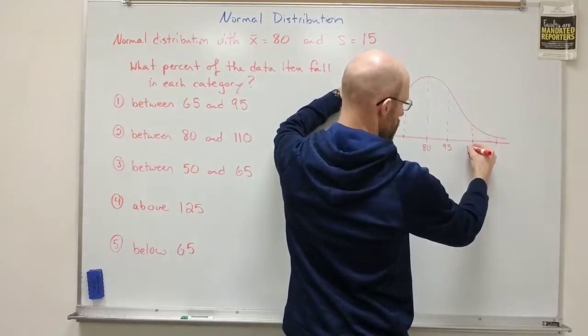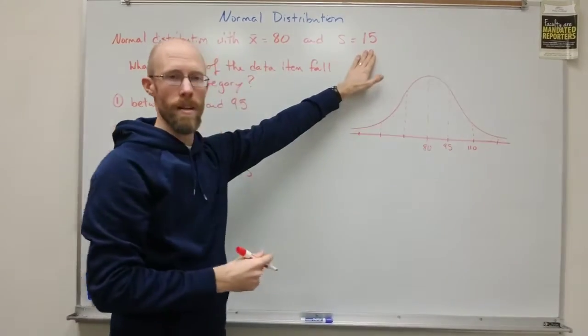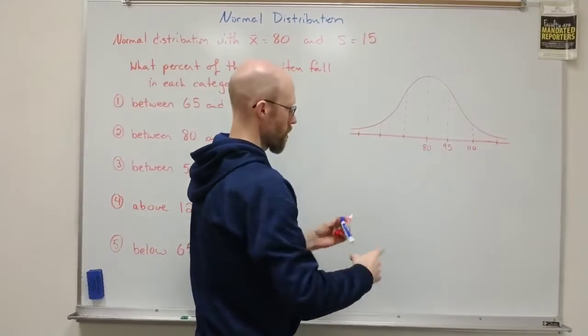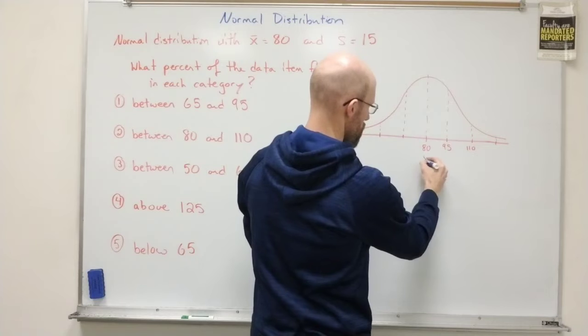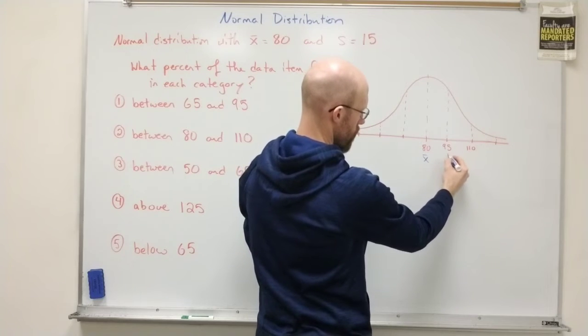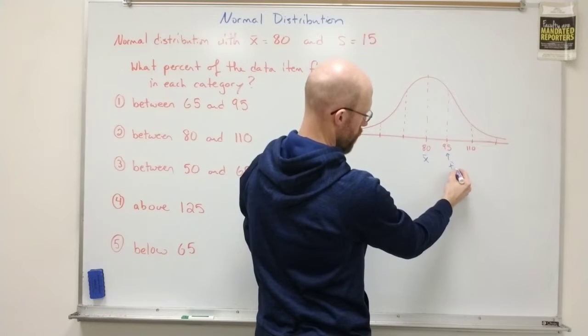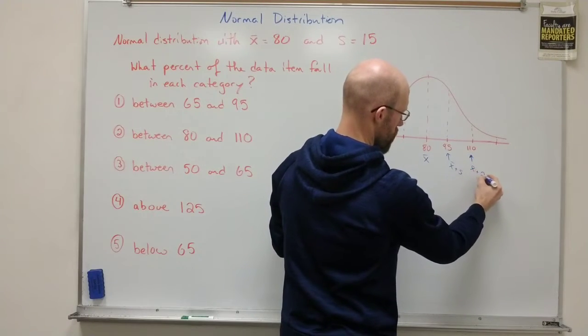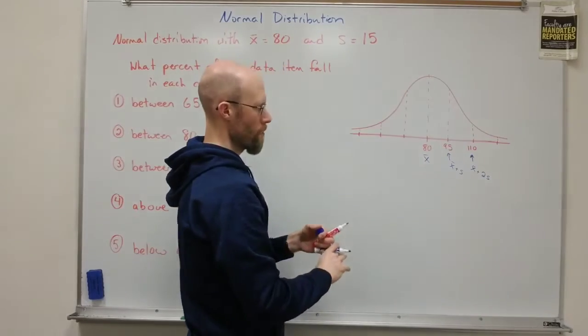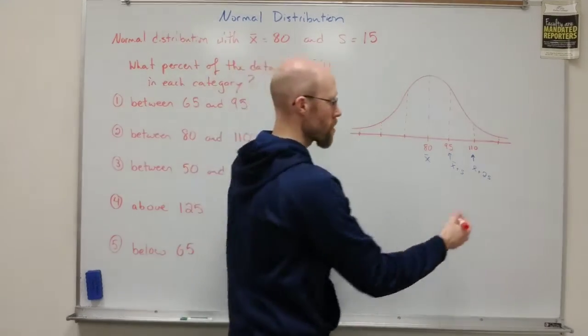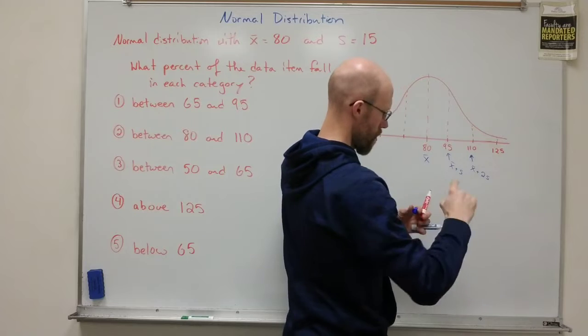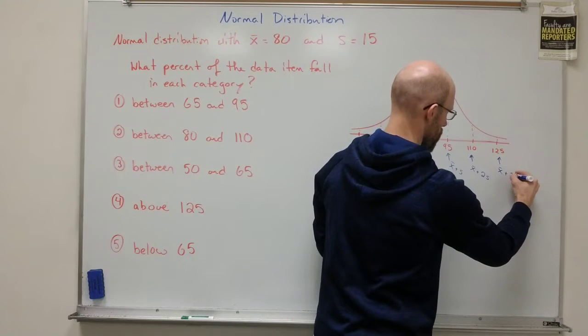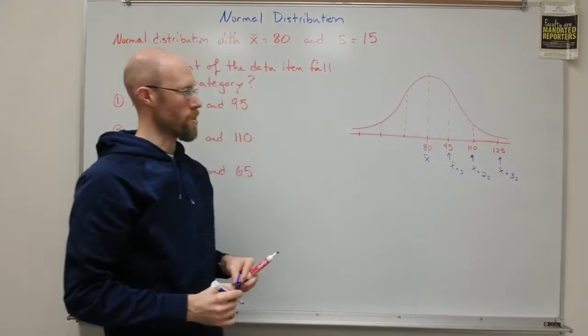Add another 15 to get 110. That's two standard deviations away. So if this is x bar, then here we have x bar plus one standard deviation, and here we have x bar plus two standard deviations. And then if I had a third standard deviation, that would be 125. So that would be x bar plus three standard deviations.